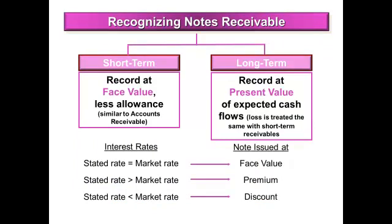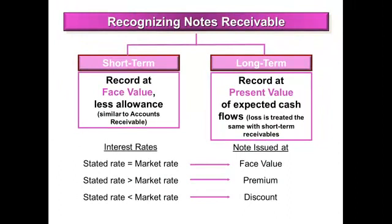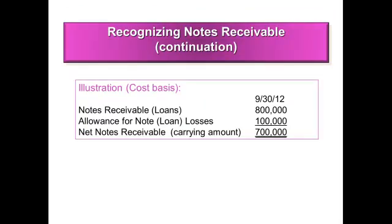Now let's look at short-term and long-term notes receivable. All you need to know is your stated rate could be less than, greater than, or equal to your market rate. When the stated rate equals the market rate, you issue a note at face value. When your stated rate is higher than the market rate, you have a premium on your note receivable. When your stated rate is less than your market rate, you have a discount. There are two types of notes: short-term, which is one year or less, and long-term, which is longer than one year. Short-term notes are recorded at face value; long-term notes are recorded at present value.